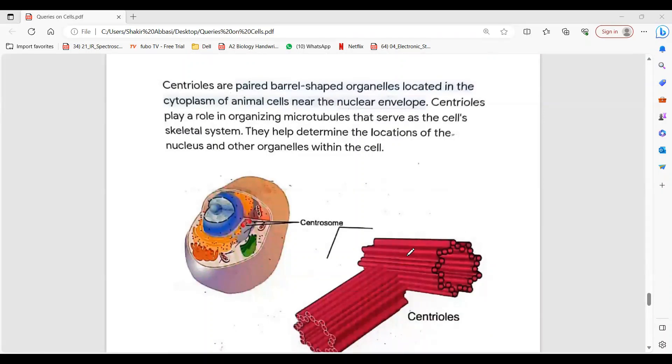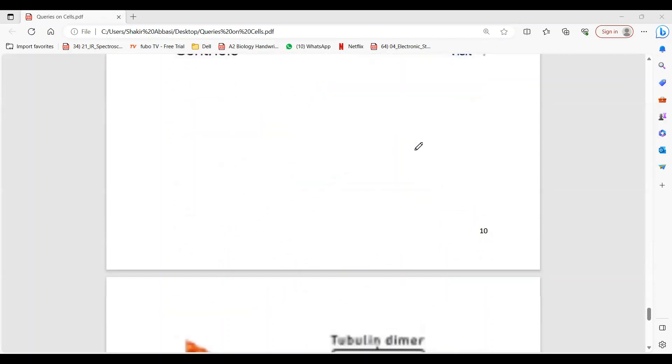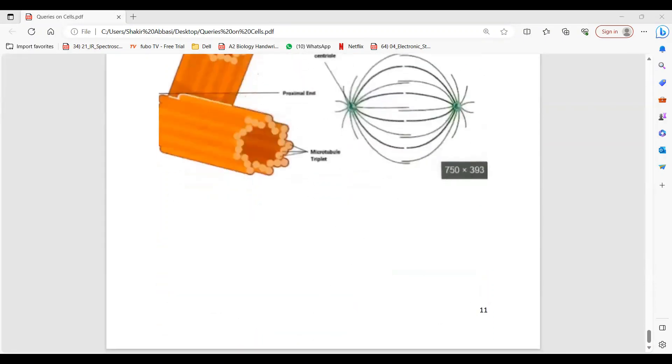Centrioles are barrel-shaped organelles. They're outside the nucleus inside an animal cell. Centrioles organize microtubules and make different structures, even cilia and spindle fibers which are used in cell division. Bye bye.